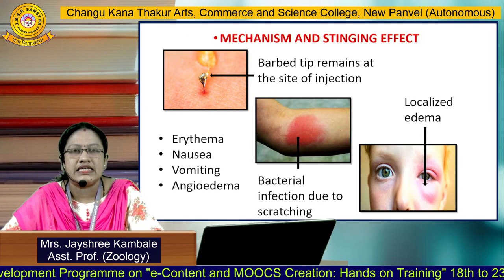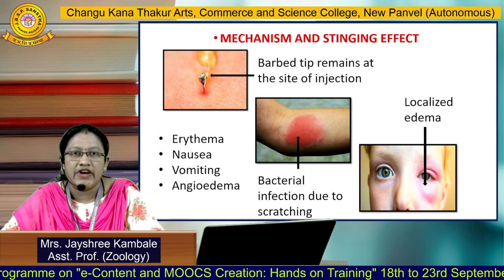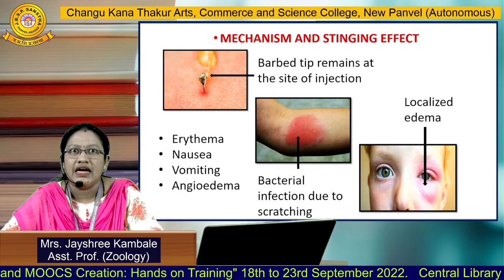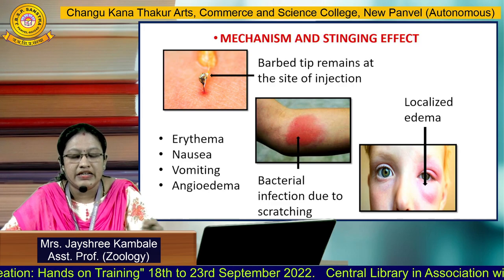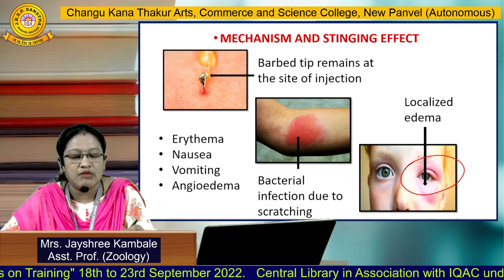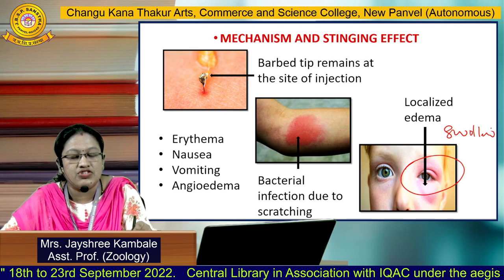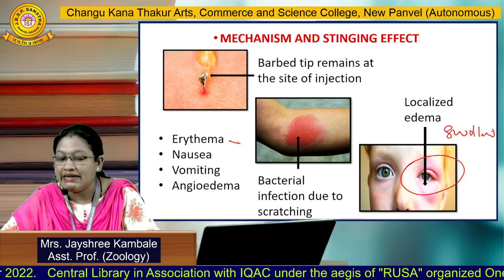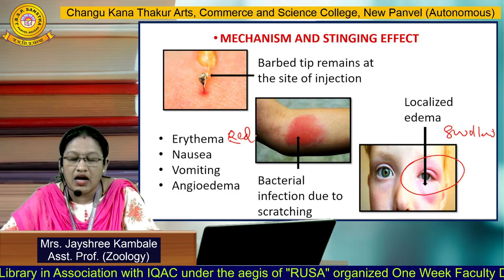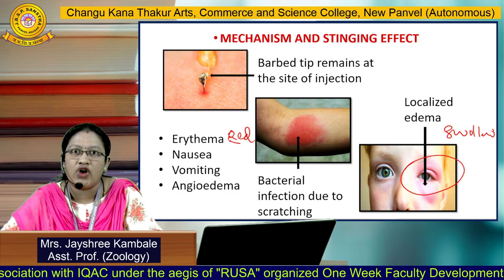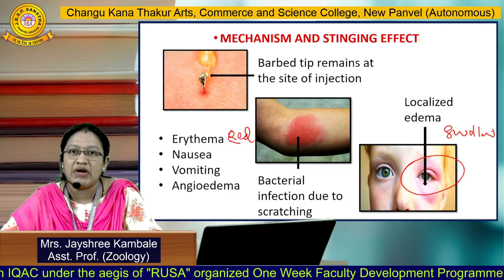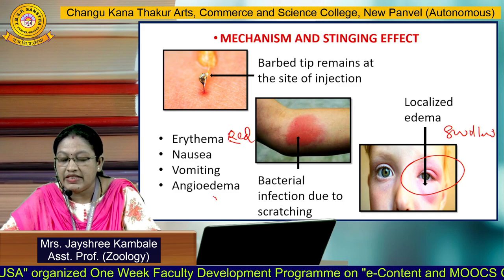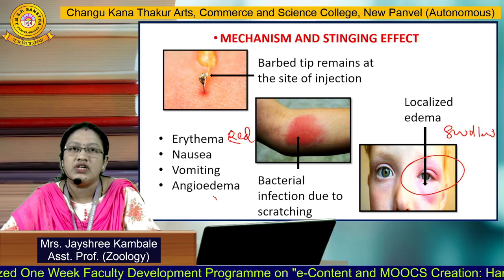The mechanism and stinging effect of honeybee toxin: whenever a honeybee stings, the barbed tip of the sting remains at the site of injection. It then shows localized edema — that is, swelling of that region — and erythema, which is redness of the skin. Along with that, it also shows nausea, vomiting, and angioedema, which is swelling beneath the skin. It also shows bacterial infection due to scratching.